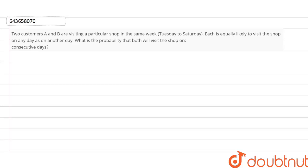Hello students, two customers A and B are visiting a particular shop in the same week between Tuesday to Saturday. Each is equally likely to visit the shop on any day as on any other day. What is the probability that both will visit the shop on consecutive days?